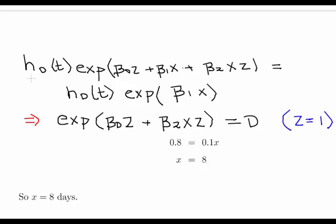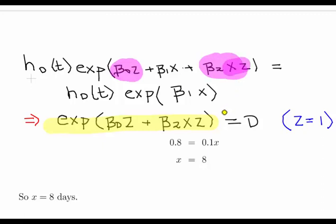Setting the two hazard expressions equal to each other, the additional terms must sum to zero. In this instance Z equals 1. We were told that beta zero is 0.8 and beta two is minus 0.1. Bringing the beta two term across to the other side of the equation gives us plus 0.1 times X.